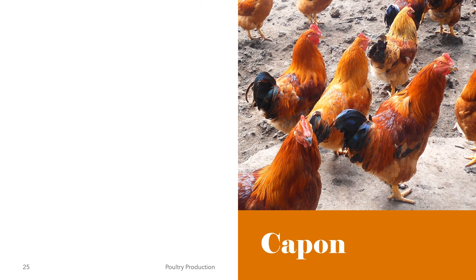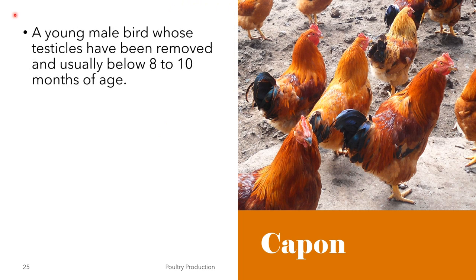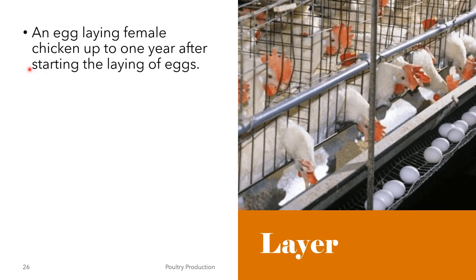We also have the term capon. A capon is a young male bird whose testicles have been removed, usually below 8 to 10 months of age. It is also defined as a cockerel or rooster that has been castrated or neutered either physically or chemically to improve the quality of its flesh for food, and in some countries like Spain, fattened by forced feeding. A layer is an egg-laying female chicken up to one year after starting the laying of eggs.